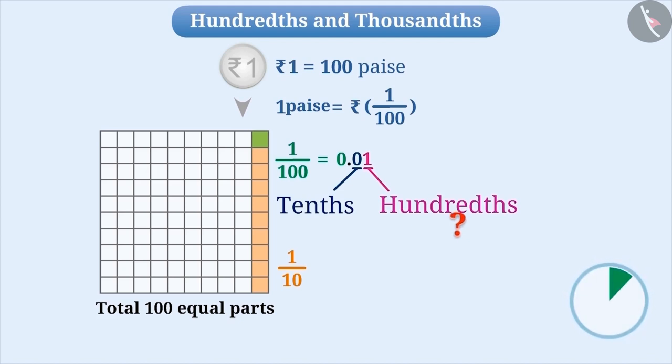What do you understand from this? Think for a while. Let me tell you, as we move from left to right, the value of each place is 1 by 10 times of its previous place.